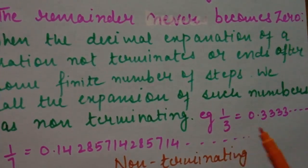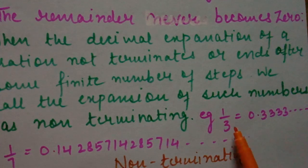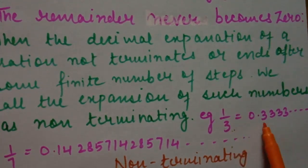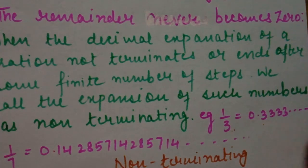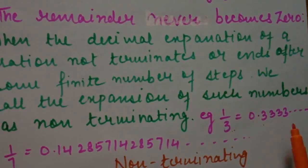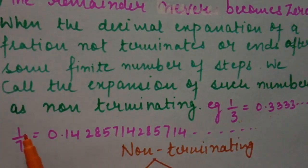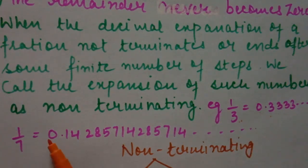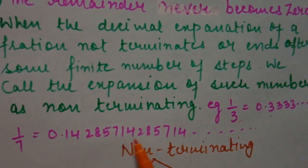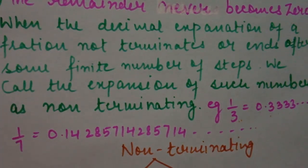Example: 1 upon 3. When 1 is divided by 3, we get 0.3333... and so on — it will never end, never give remainder 0. Similarly, 1 upon 7 gives 0.142857142857... and so on. It never ends.